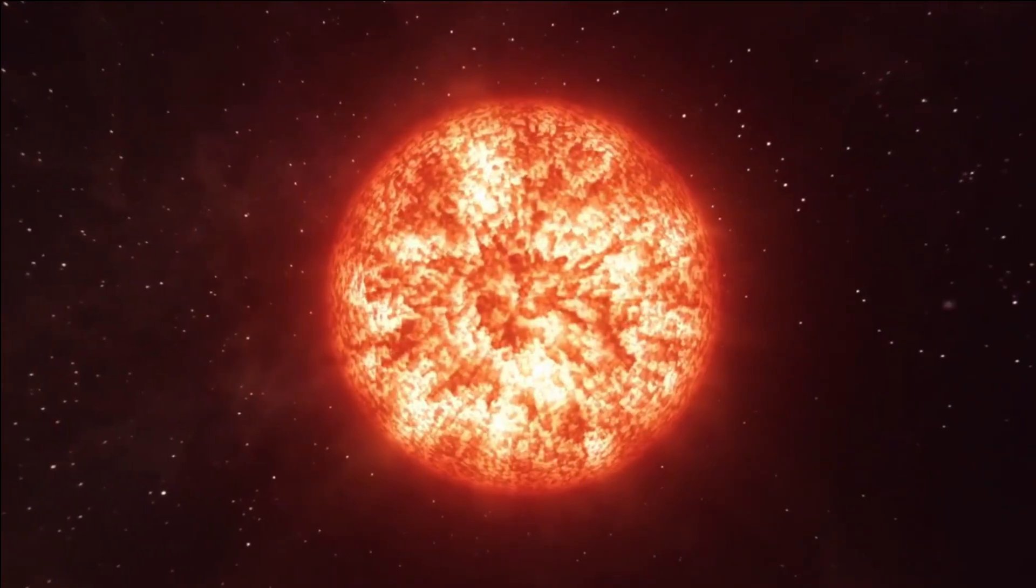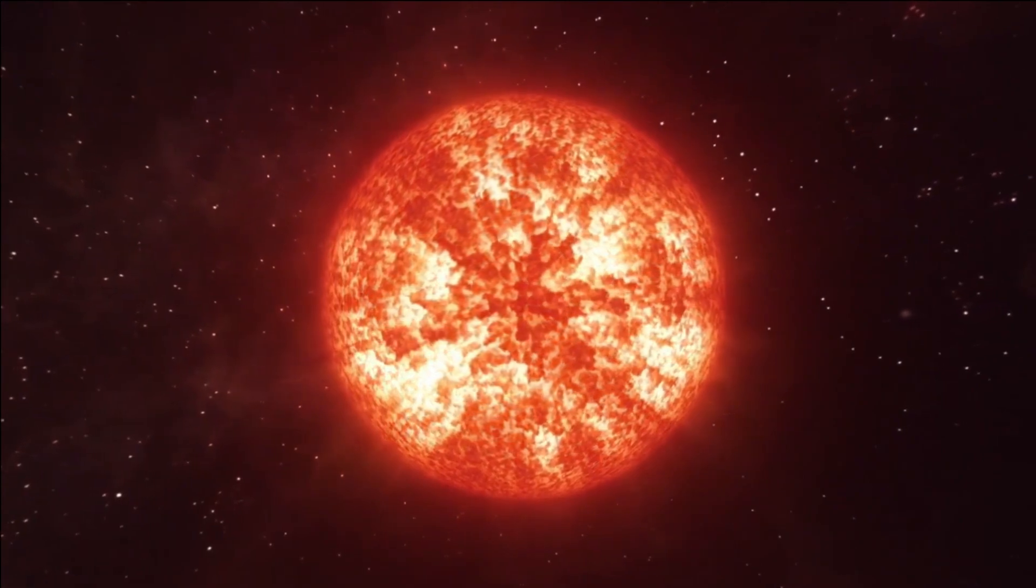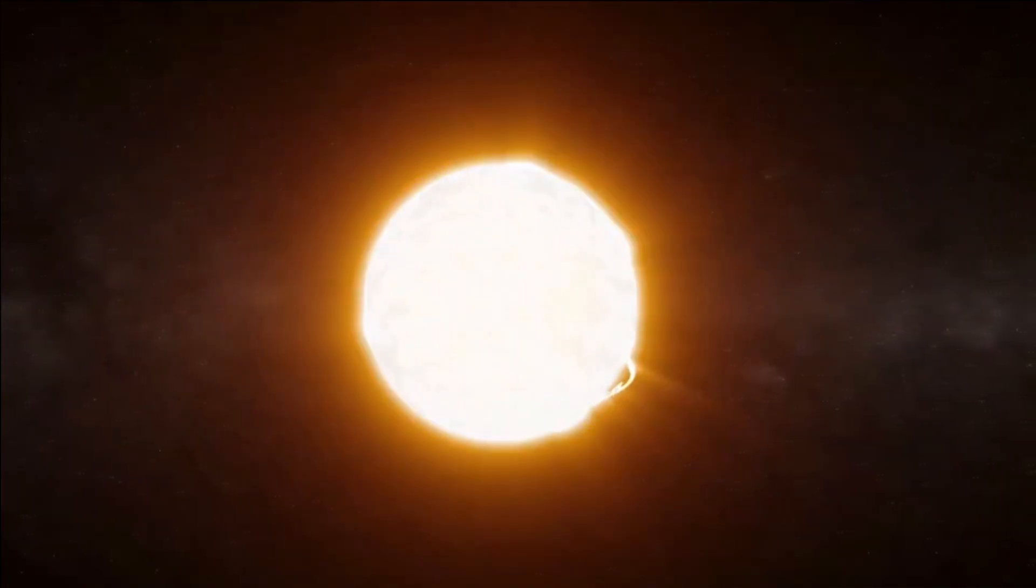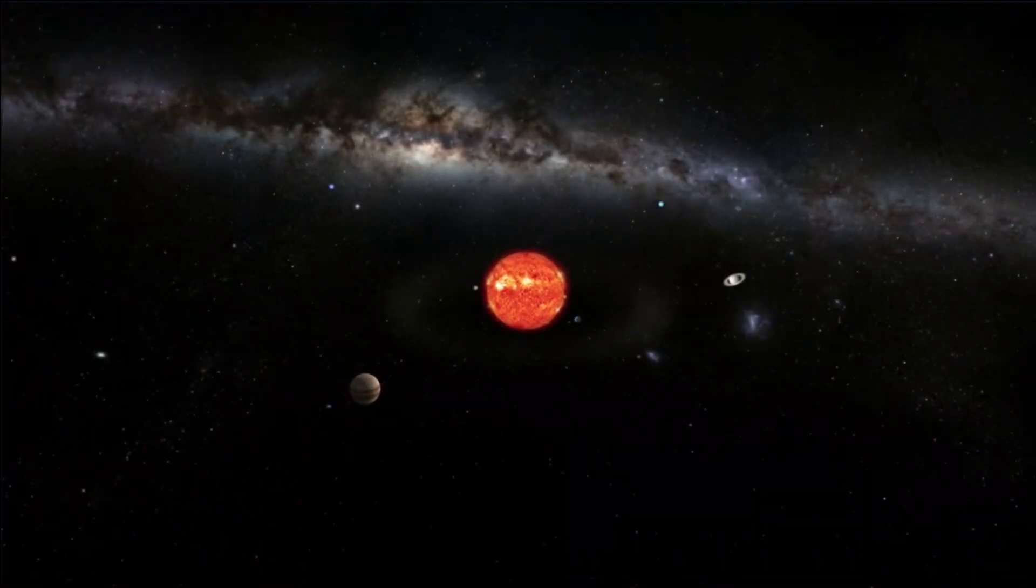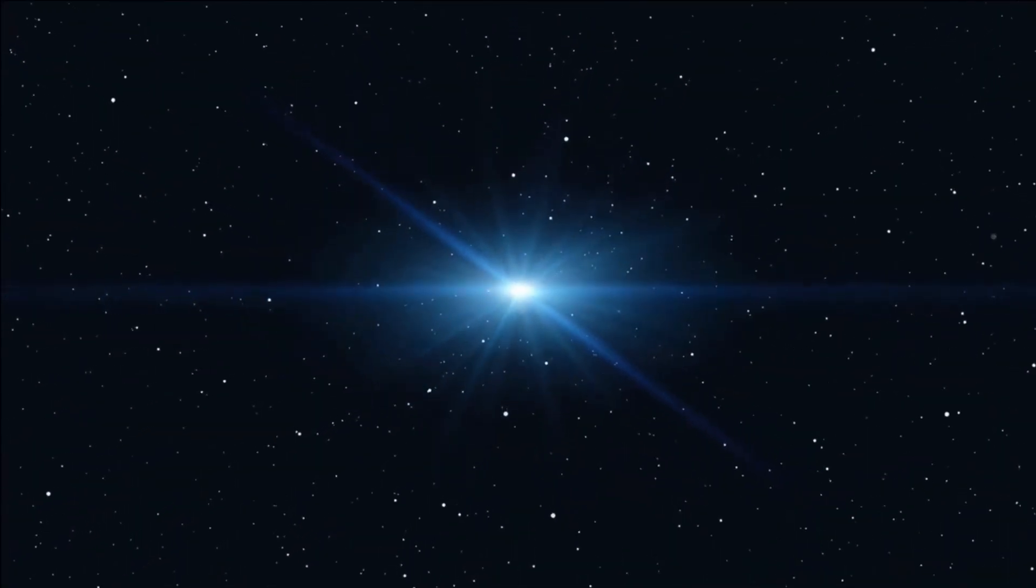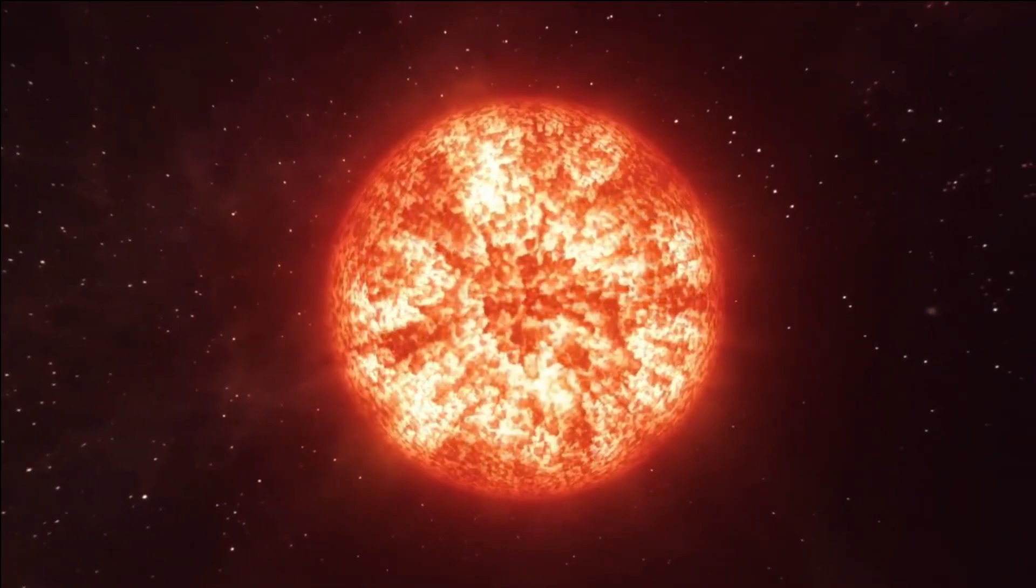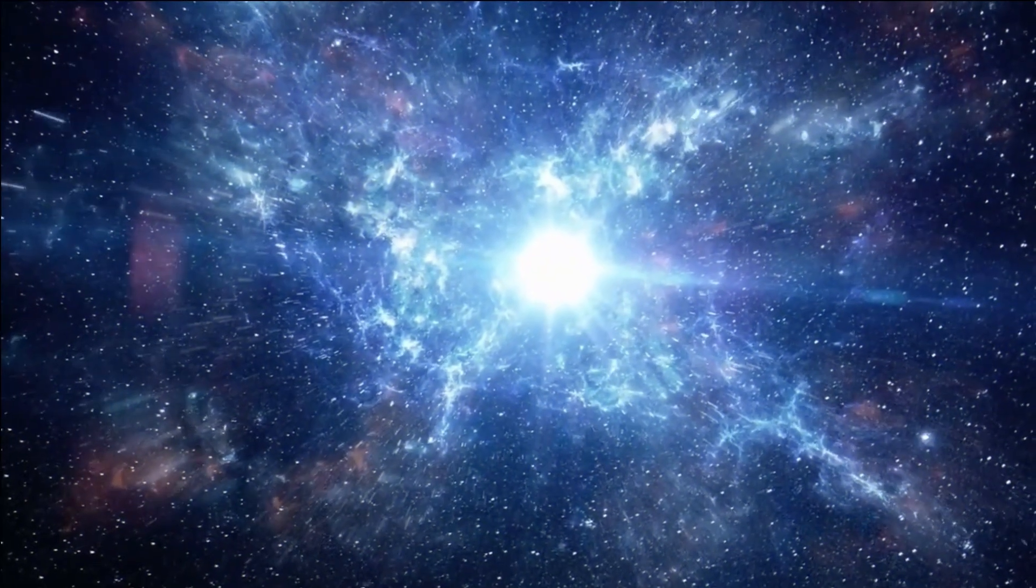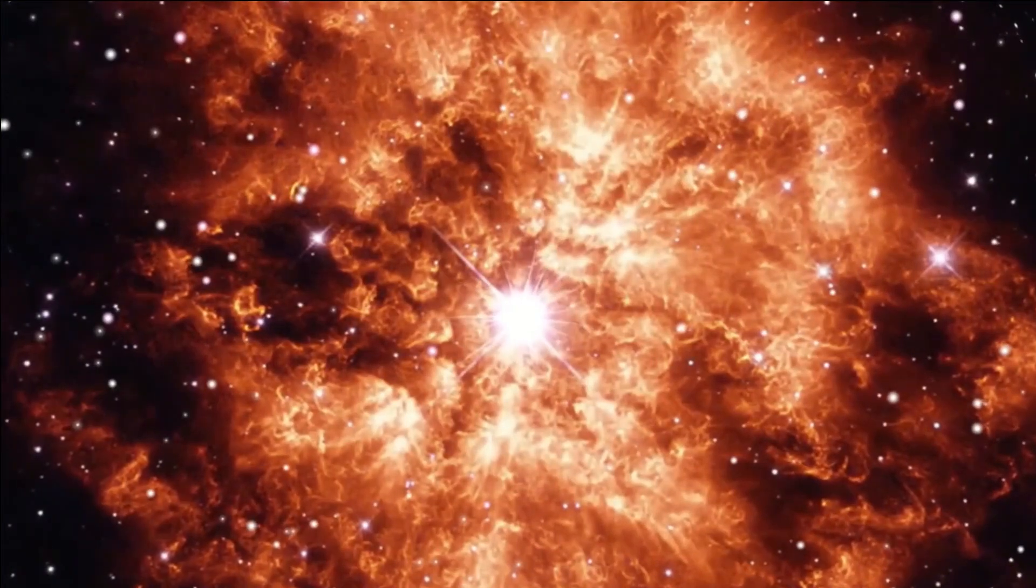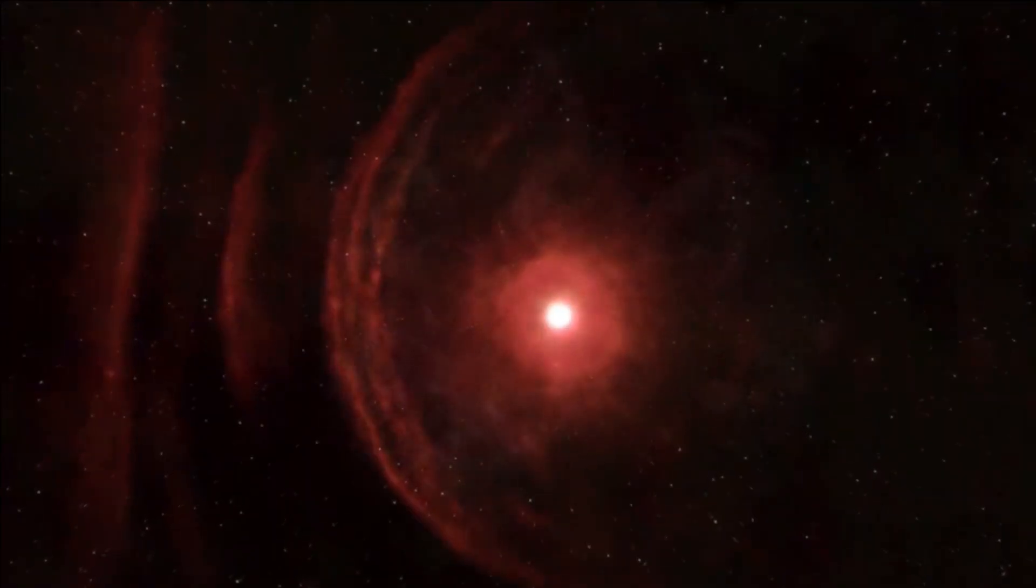But here's the kicker. Betelgeuse is about to go supernova, and when it does, it'll light up the night sky like a disco ball on steroids. We're talking about an explosion so big it'll make the atomic bomb look like a party popper. And the worst part? We can't do anything about it. We can't stop it or even slow it down. Betelgeuse is a single star, hence scientists refer to it as a rebel star, a loner, a runaway who refused to be associated with any star system.